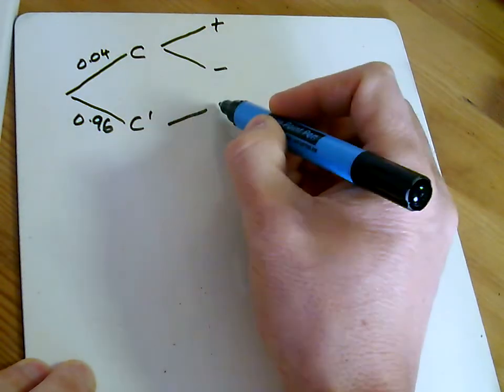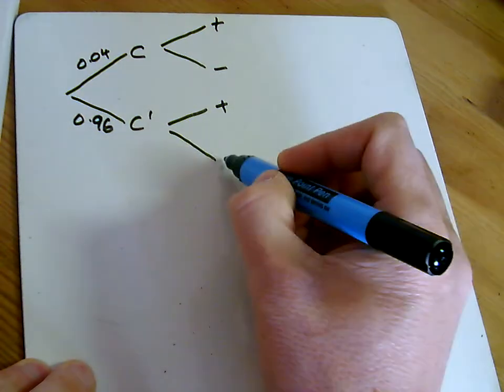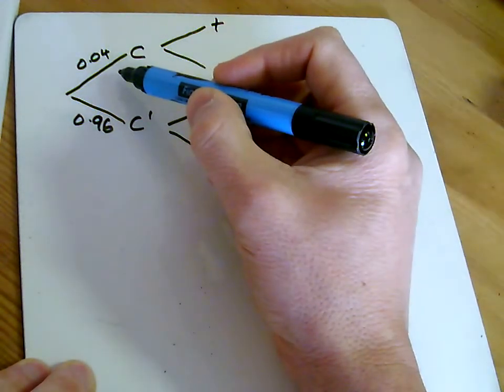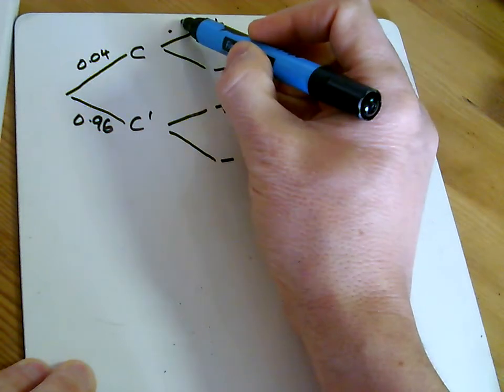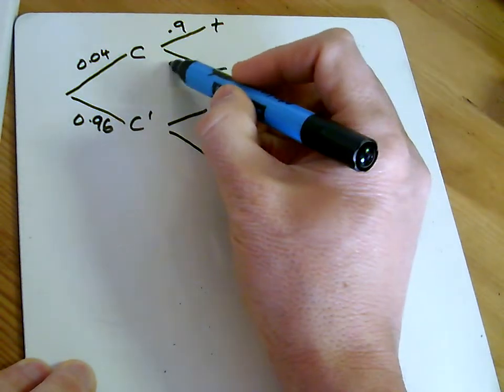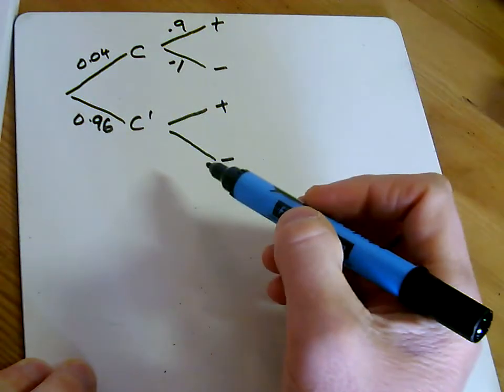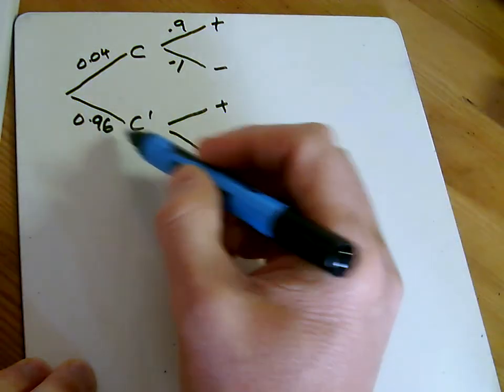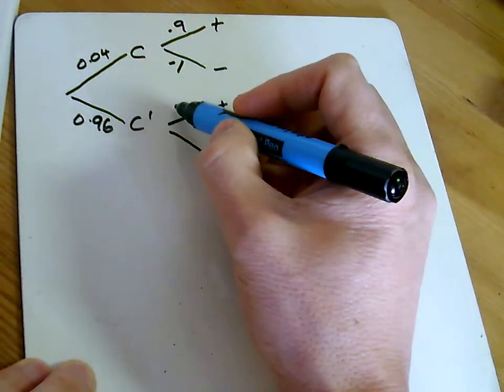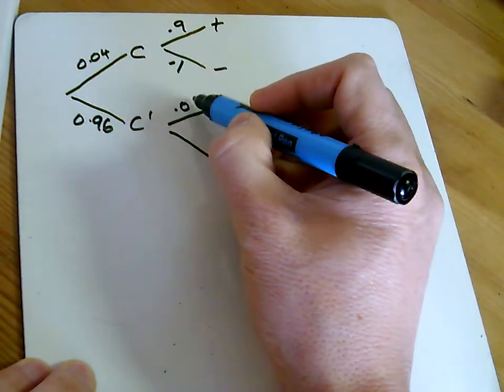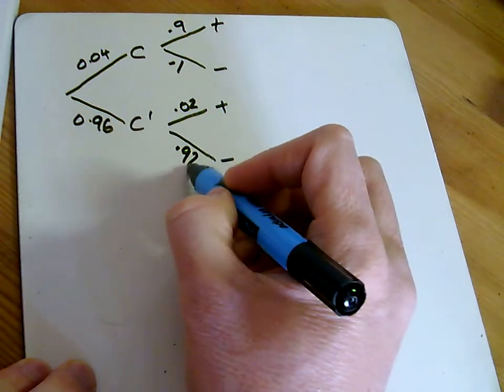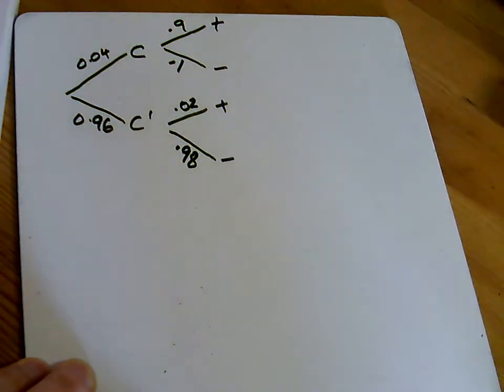But it could be positive or negative if you don't have the condition as well. And if you have the condition, 90 percent will test positive, but there'll be some mistakes, just a 10 percent mistake there. If you don't have the condition, then a handful of times it will get it wrong. So I put 0.2 here, but almost all the time, 98 percent, it will correctly tell you that you haven't got it.